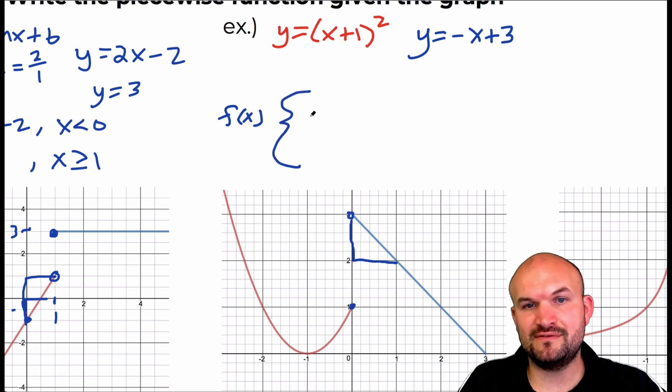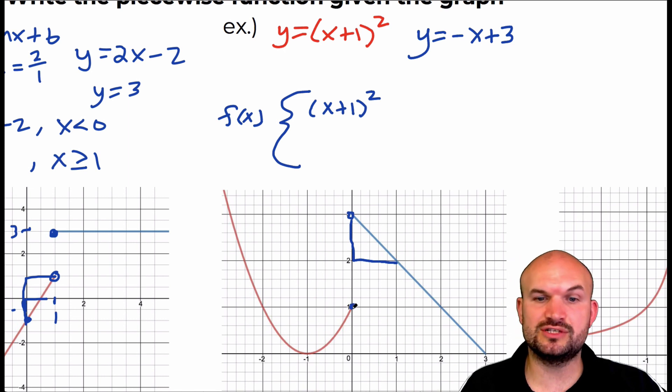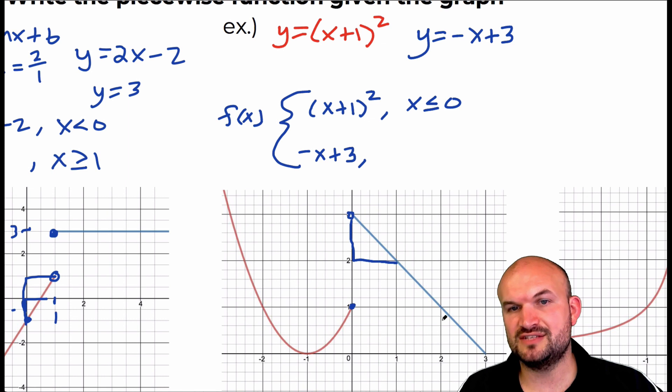So, I have the red graph, which is x plus one squared. And, since I put a dot there that's going to be included, that means that function is going to be for all values that are less than zero, or less than or equal to. So, the restriction here would be x is less than or equal to zero. The next equation is negative x plus three. And, the restriction for that is for all x values that are greater than zero, but not equal to, because zero is only equal in this function, not this one. So, I just write x is greater than zero.